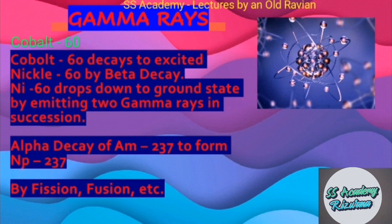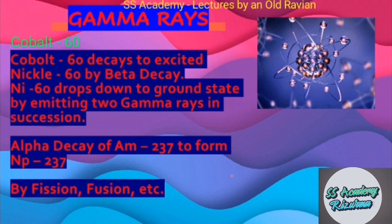Gamma rays are also produced by alpha decay of americium-237 to form neptunium-237. And they are also produced by fission and fusion reactions. For detection, we use spectrometers that use scintillators or solid-state detectors to transform gamma rays into optical or electronic signals.